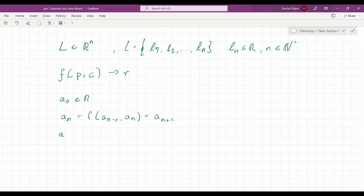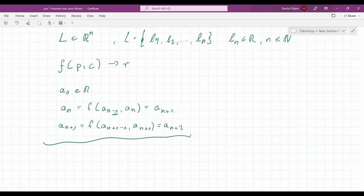And our next step would be an plus 1 equals f of... I write it a bit weird now. But it's an plus 1 minus 1. Because it's this minus 1. And now an plus 1. And now we would have an plus 2 in this case. Because we are a step further. Now let's apply this to a real case.